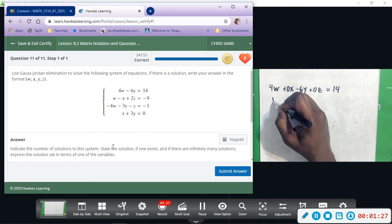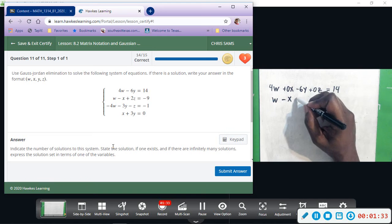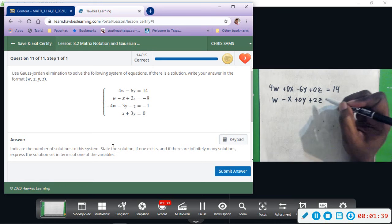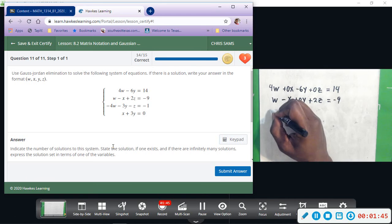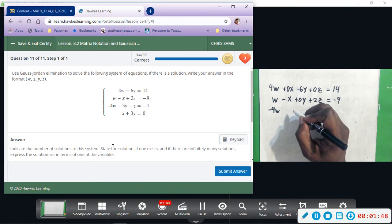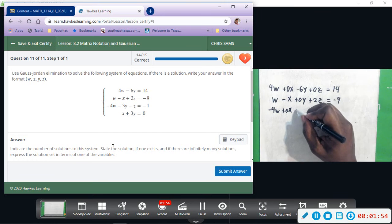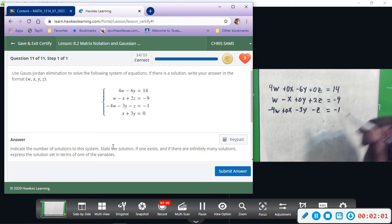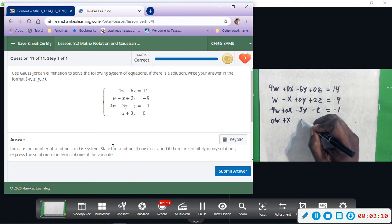Equals negative 9. And then minus 4w, we don't have an x so plus 0x, and then minus 3y minus z equals negative 1. And then the last row, we don't have a w so 0w plus x plus 3y, no z so plus 0z, equals 0.